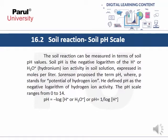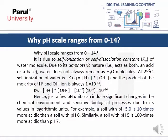The formula is: pH = −log[H⁺] or pH = −log[H₃O⁺], which is equivalent to 1 divided by the log of hydrogen ion concentration. This raises the question: why does pH range from 0 to 14?